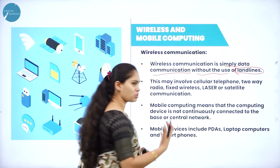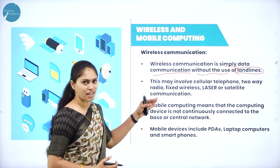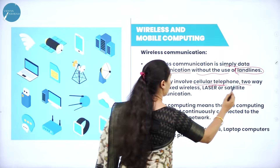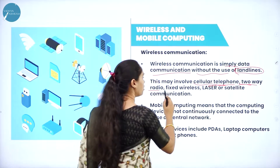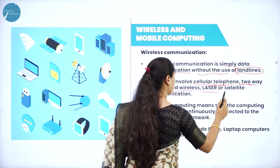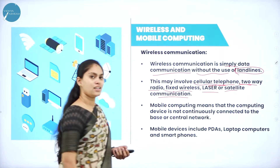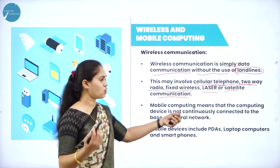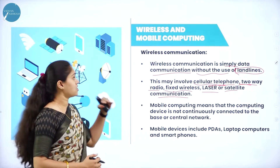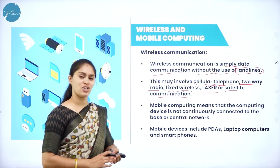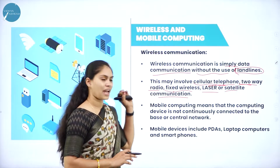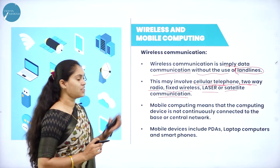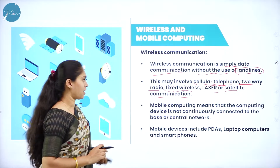Wireless communication is simply data communication without the use of a landline or cables. It includes telephone and cellular telephone, two-way radio, fixed wireless, and communication via laser or satellite. These are the methods used to establish wireless or virtual communication and have data transmission over the internet.